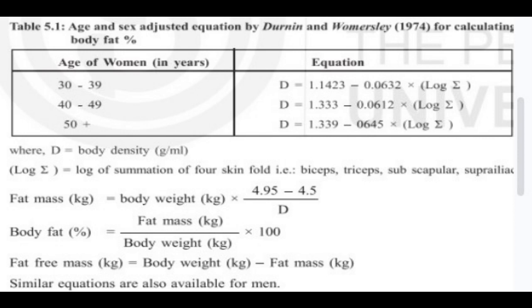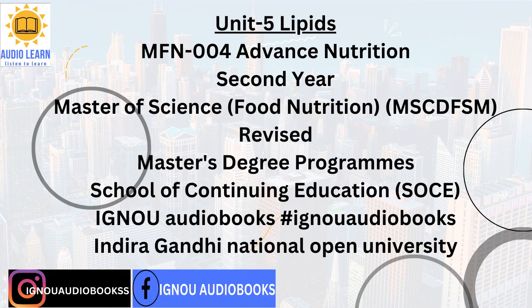Other methods like dual energy X-ray absorptiometry (DXA), magnetic resonance imaging (MRI), and computed tomography (CT) are accurate and can find fat distribution. These methods have a disadvantage of being expensive, involve radiation exposure, and are not suitable for field work. Having learnt about some basic facts about fats and methods of assessing body fat, let us now study the types and significance of fats and lipids in human diet. We must know the amount necessary for optimal functioning of the body and the implications of excess intake on long-term health.